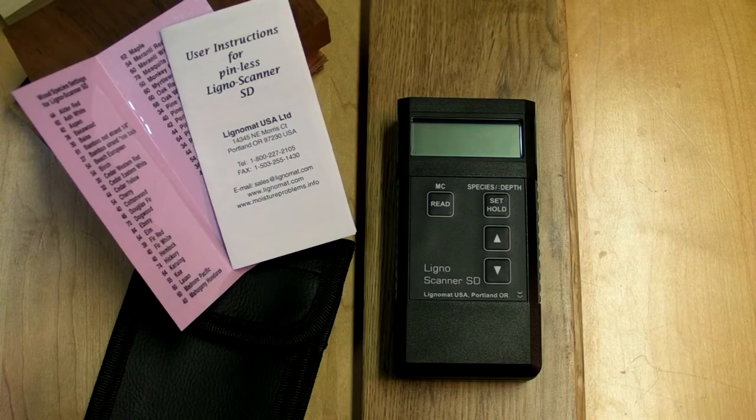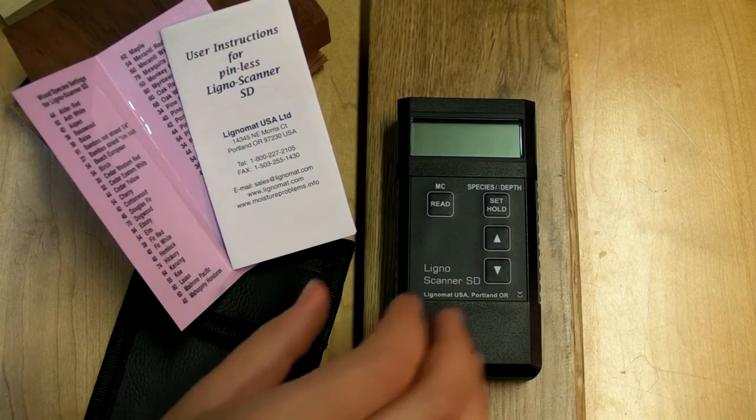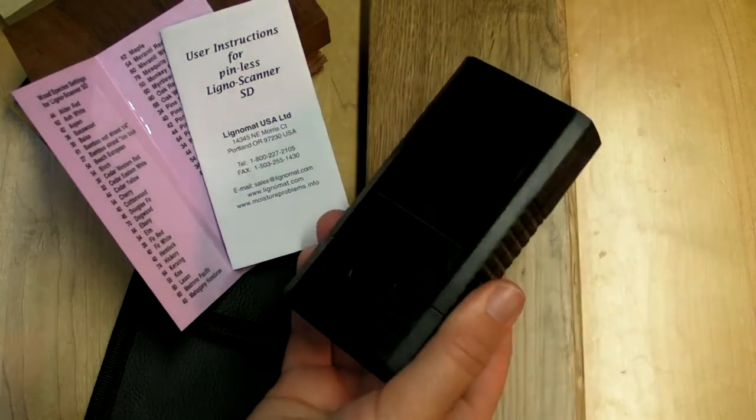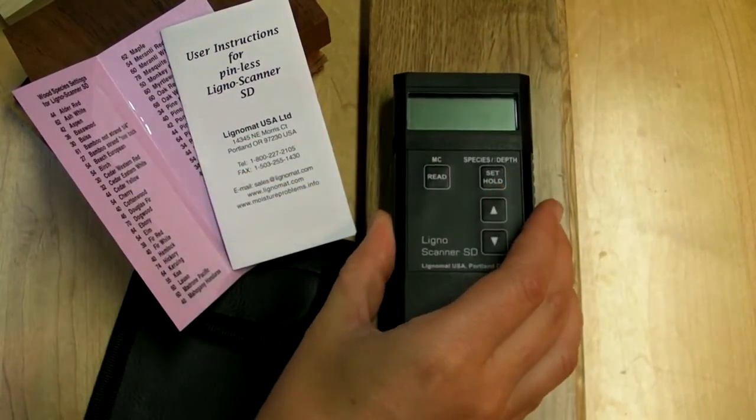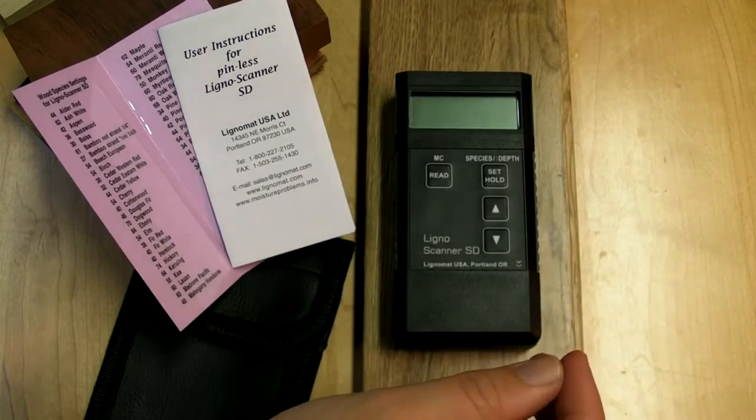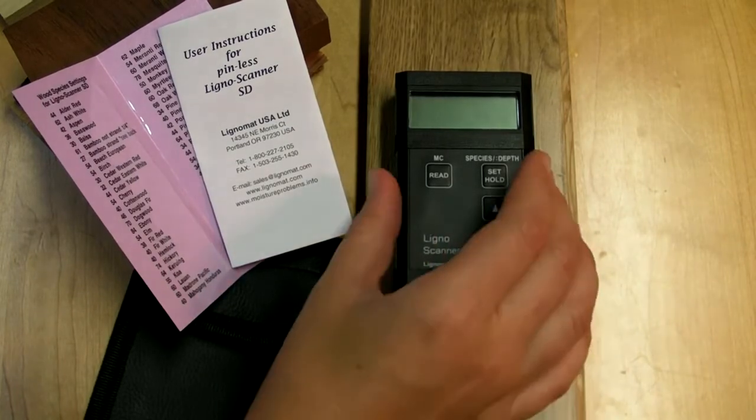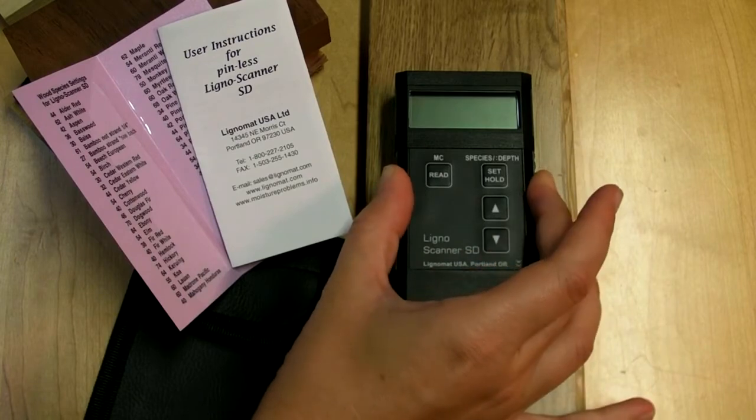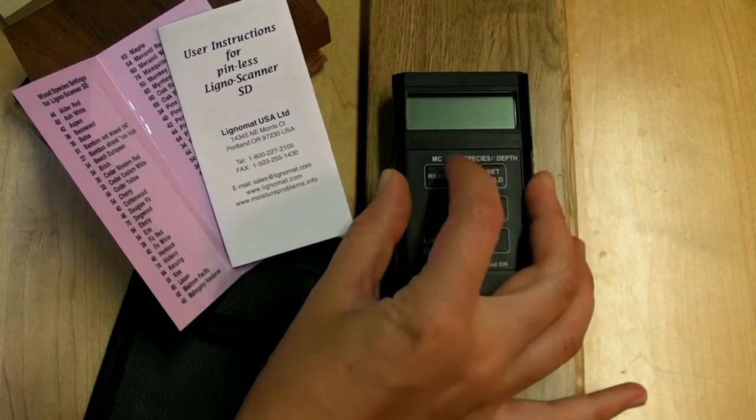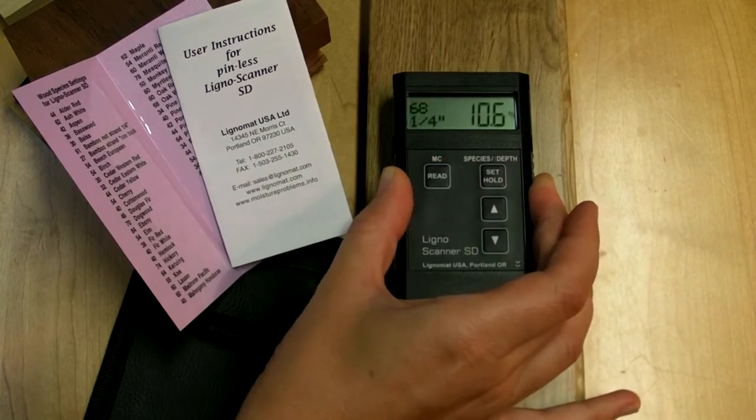Now you are ready to take readings. The measuring pads are on the back of the meter. Place the meter on the wood so that no part of the meter is hanging over the edge. Place light pressure on the sides of the meter to make solid contact between the pads and the wood. Press the Read button and your moisture percentage will show on the right side of the display.